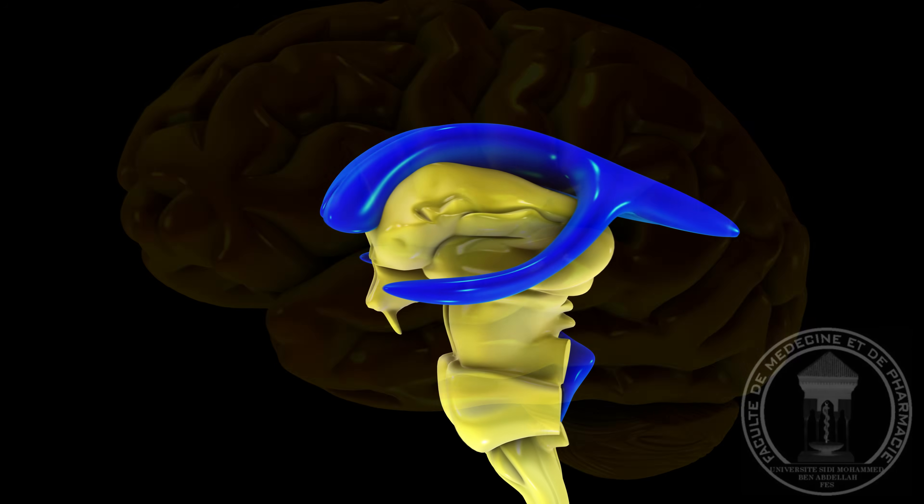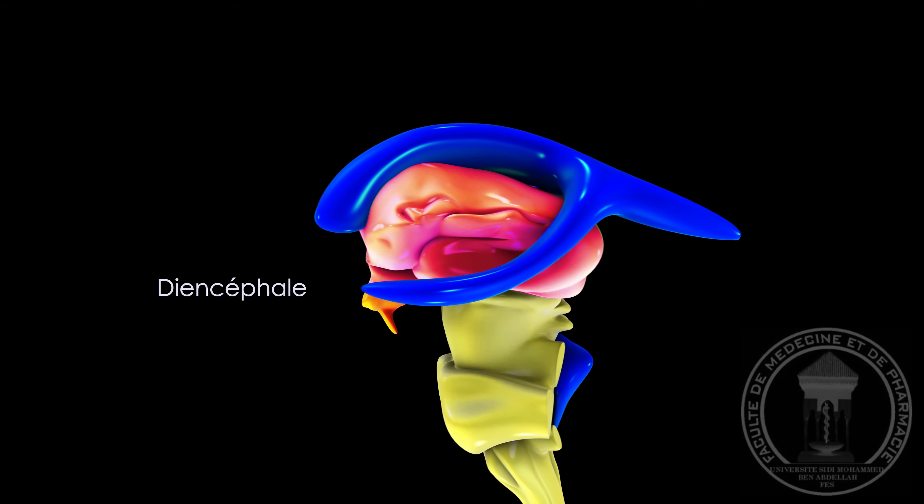Couverte par les deux hémisphères cérébraux, le diencéphale est la structure du système nerveux central qui se trouve au centre du cerveau. Il comporte des amas de substances grises, dont le thalamus et l'hypothalamus, qui jouent un rôle extrêmement capital dans l'organisme.